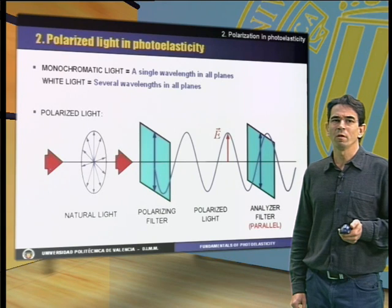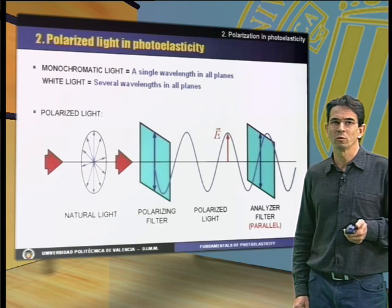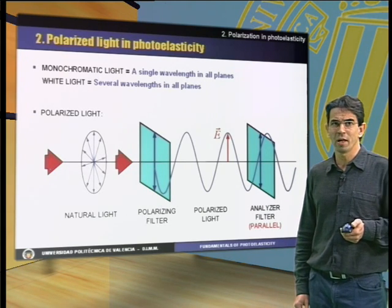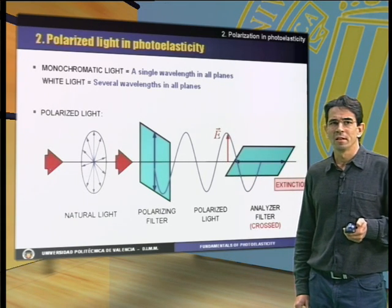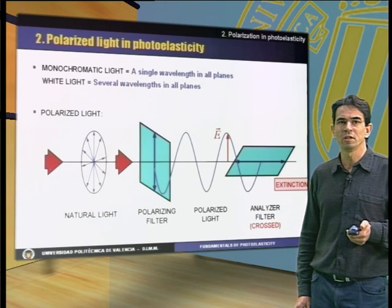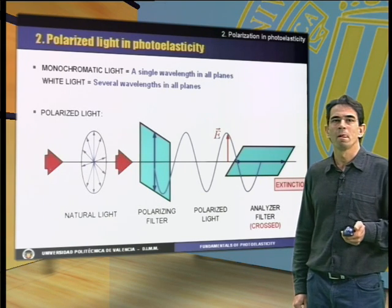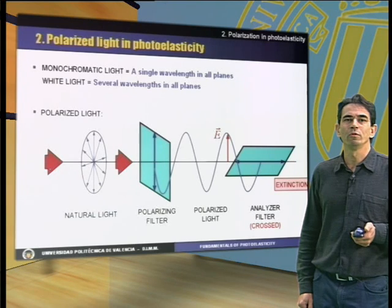However, if one of the filters is rotated with respect to the other, such that the filter polarizing direction forms 90 degrees, then the ray of light will be totally extinguished, as shown in the picture, and no light will go through the analyzer filter.